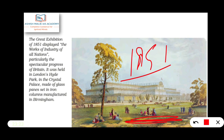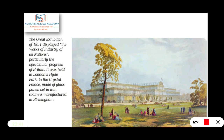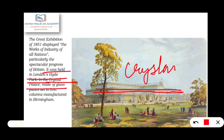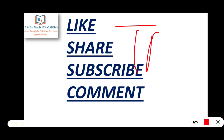The Great Exhibition of 1851 displayed the works of industry of all nations, and particularly the spectacular progress of Britain. It was held in London's Hyde Park in the Crystal Palace, made of glass. The columns were manufactured in Birmingham. This is all about theme number 9 — the Industrial Revolution.